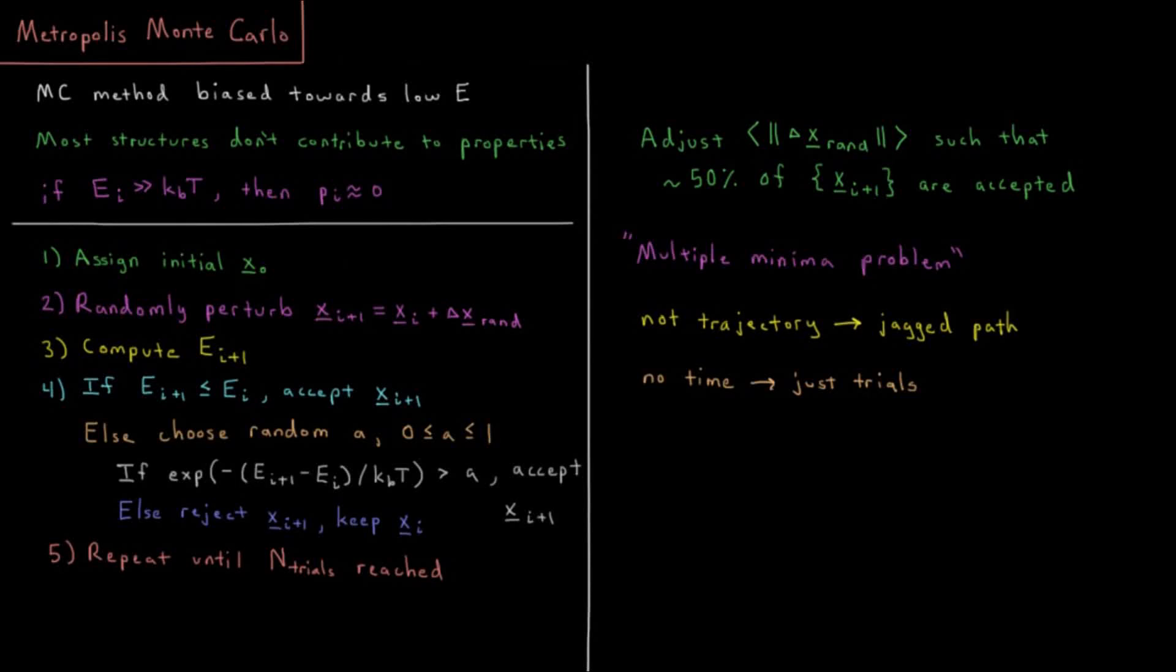This video will discuss the Metropolis Monte Carlo algorithm for computing average properties in molecular simulations. We mentioned in our previous video that Monte Carlo methods are not biased towards any particular configuration.